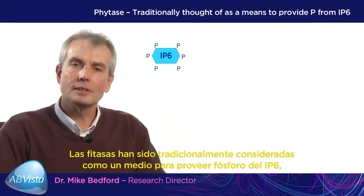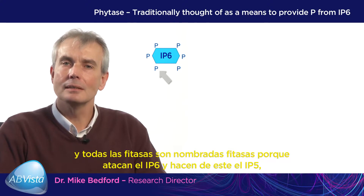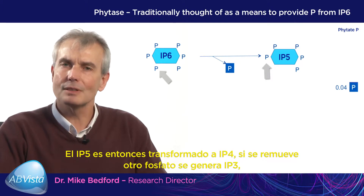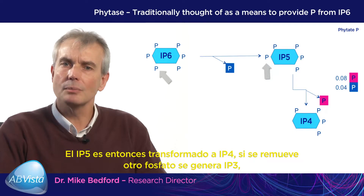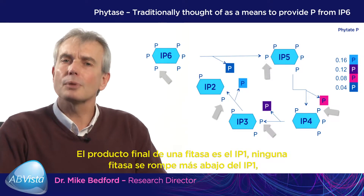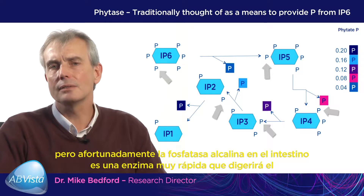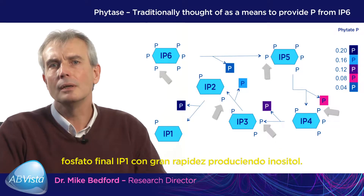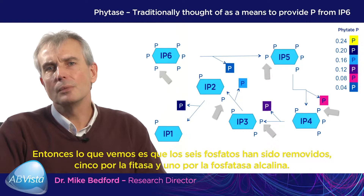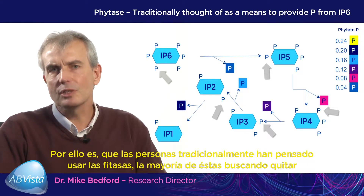Phytases are traditionally thought of as a means to provide phosphorus from IP6. All phytases are called phytases because they attack IP6 and make from it IP5, which is a new substrate which phytases continue to attack. IP5 is then made into IP4, another phosphate removed to generate IP3, and another phosphate removed to generate IP2. The final product of a phytase is IP1. No phytase breaks down IP1, but fortunately alkaline phosphatase in the gut is a very rapid enzyme that will digest IP1, producing inositol and the final phosphate. So the six phosphates are removed — five by phytase and one by alkaline phosphatase. That is how people have traditionally thought of using phytases.